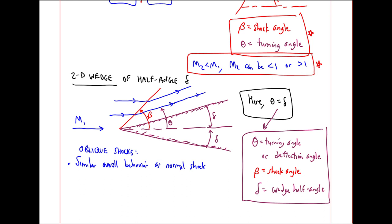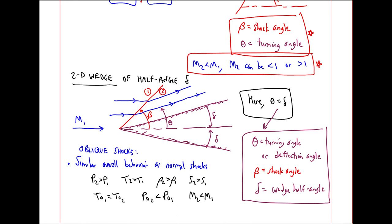Oblique shocks have similar overall behavior as normal shocks. The pressure increases across the shock from 1 to 2. As with the normal shock, temperature increases. Density increases. Specific entropy increases. But like a normal shock, stagnation temperature stays the same. But stagnation pressure decreases. And as we've already said, M2 is less than M1.